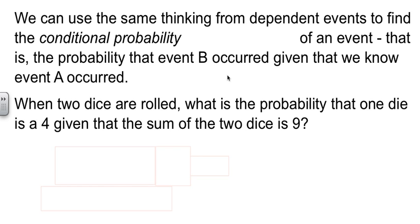So we're going to look at a problem here. When two dice are rolled, we want the probability that one of the dice is a four, given that we know the sum of the two is nine.